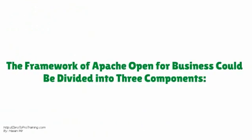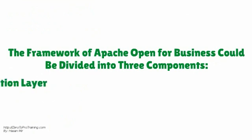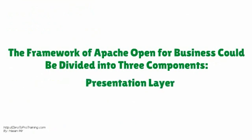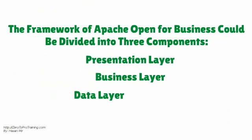The framework of Apache Open for Business can be divided into three components: presentation layer, business layer, and data layer.